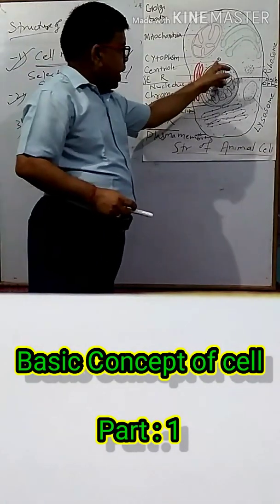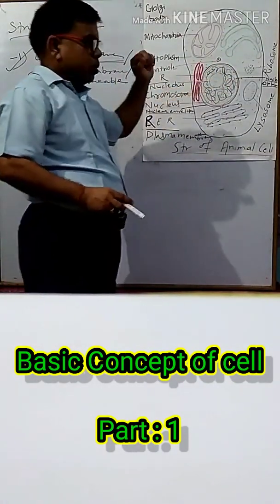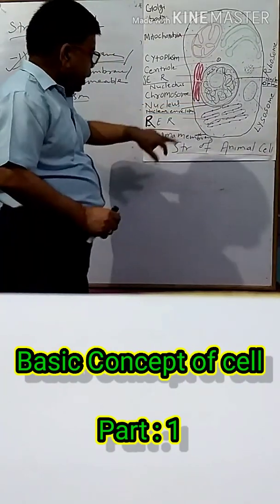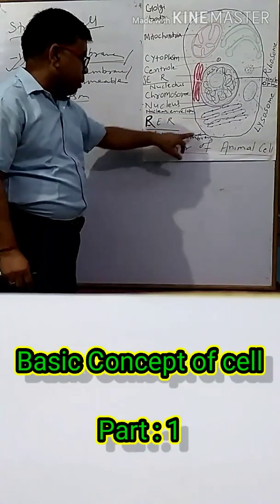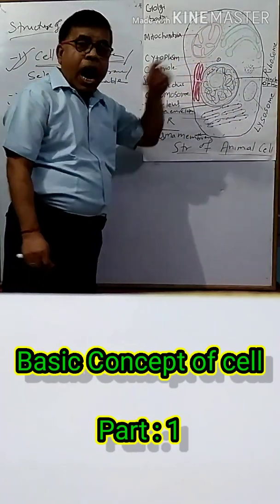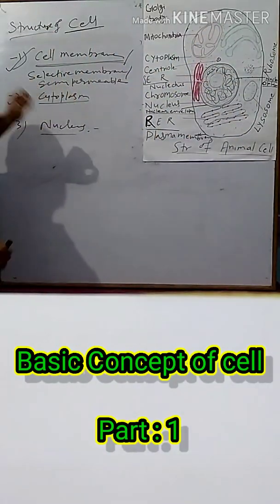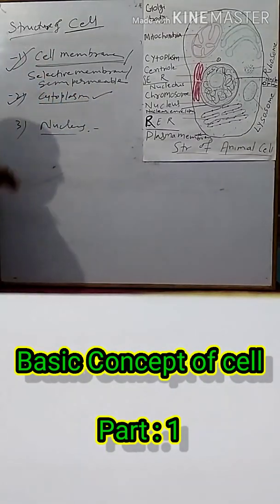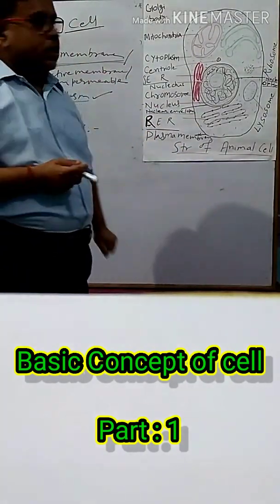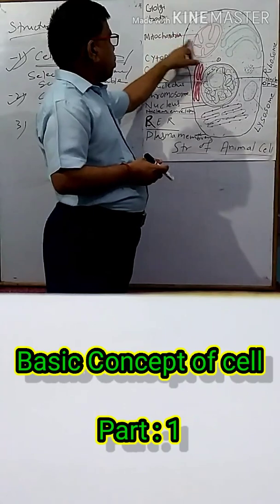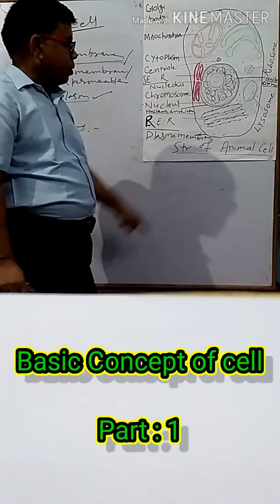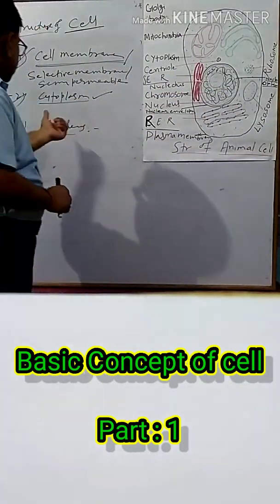Number two: cytoplasm. In this diagram, this is the nucleus, and its outer covering is called the nuclear envelope. In between the plasma membrane and the nuclear envelope, some fluids are found, and these fluids are called cytoplasm. In the cytoplasm, some living organelles are found, such as mitochondria, Golgi body, ribosome, lysosome, and endoplasmic reticulum.